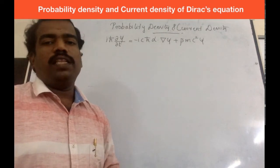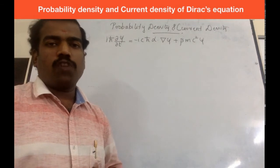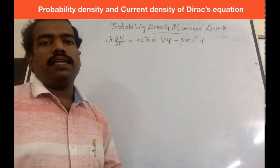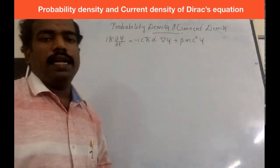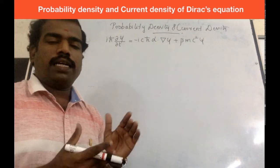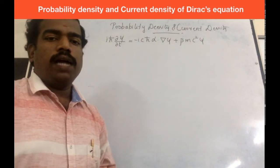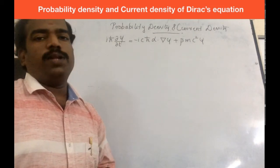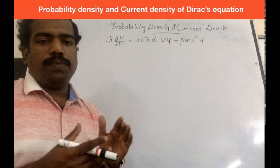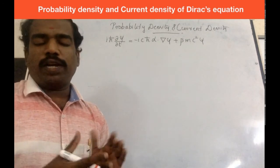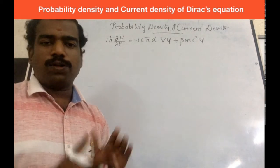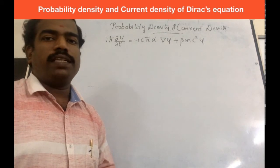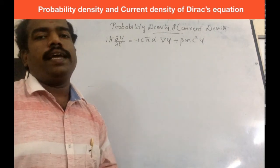Instead of complex conjugate, we are taking Hermitian conjugate, since we are dealing with operators. There is a rule: the matrix product should be reversed if you take the Hermitian conjugate.